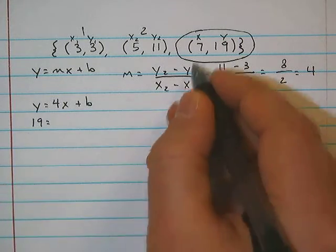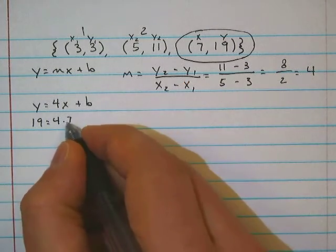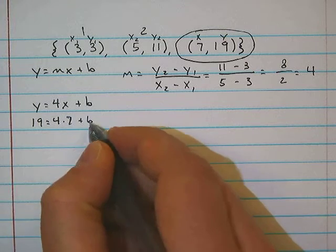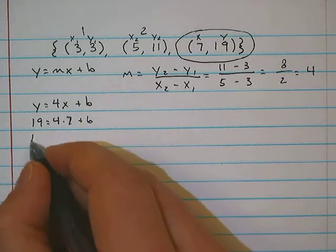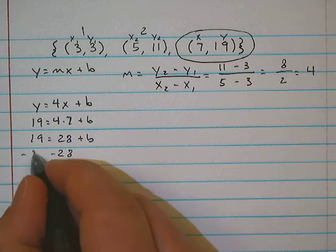I'm going to substitute this into this equation now. So my y value is 19. That's equal to 4 times 7. So 4 is our slope times x value 7 plus b. And then we simplify. So 19 is equal to 28 plus b.